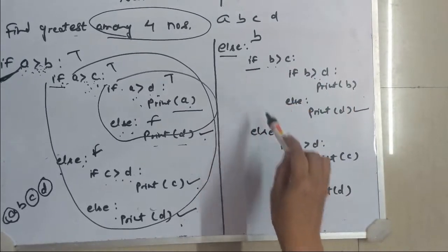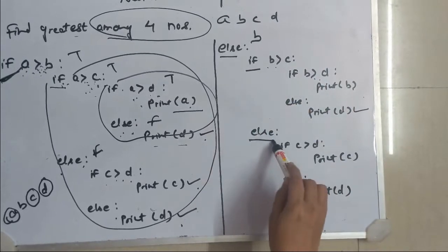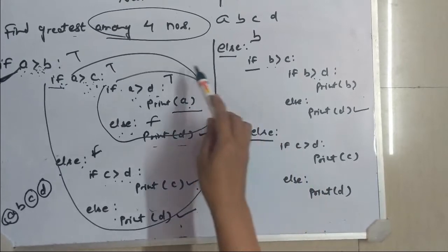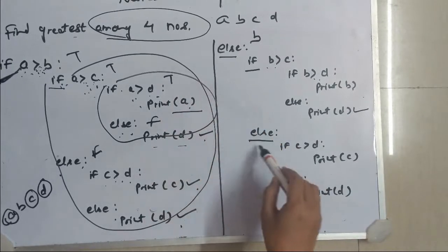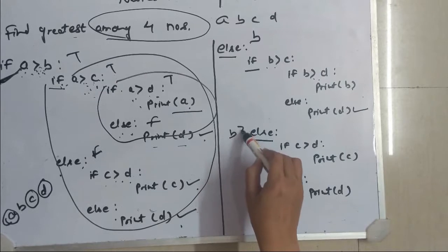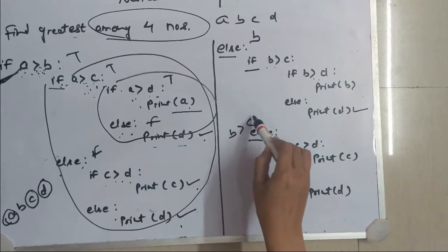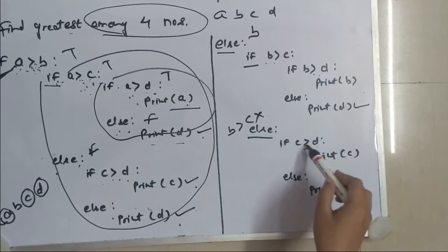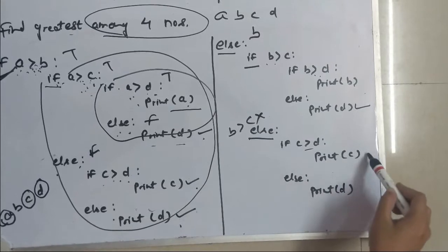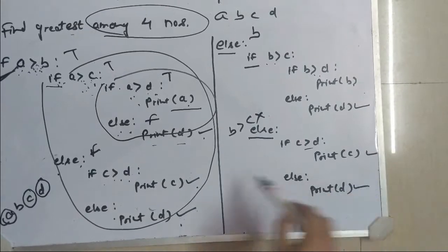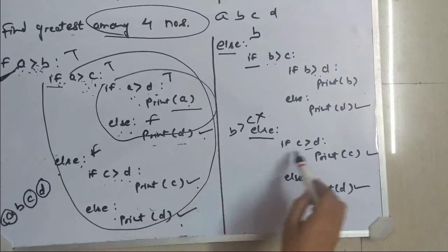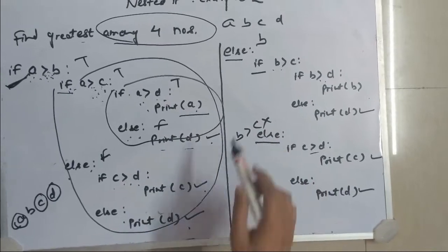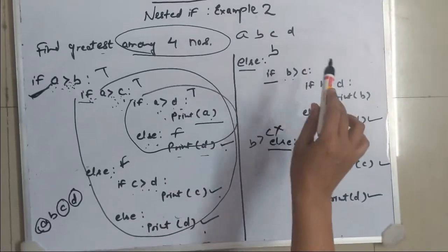Then I will come to the else of this if. In this, the else means B was greater than A but B was not greater than C. So I will compare C with D. If that is true, then C is greatest; otherwise D is greatest. So these parts will be identical. In this way, we complete finding the greatest of four numbers.